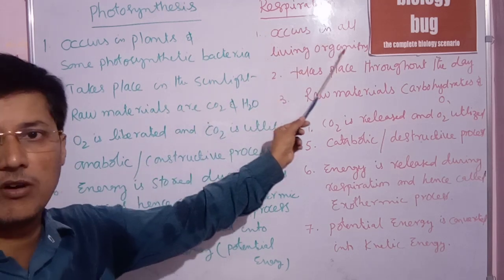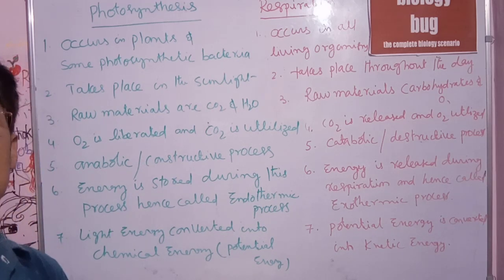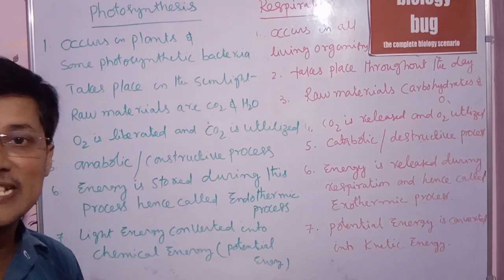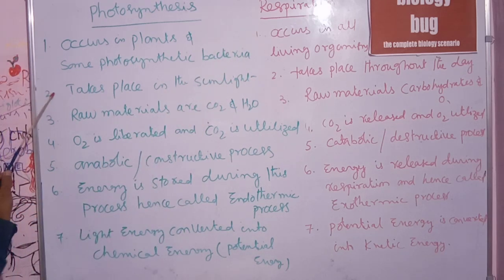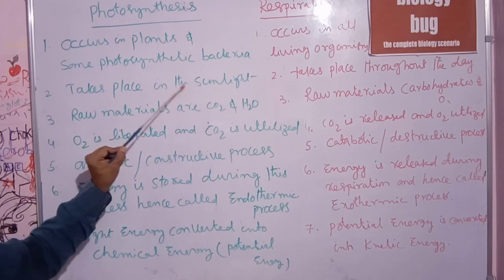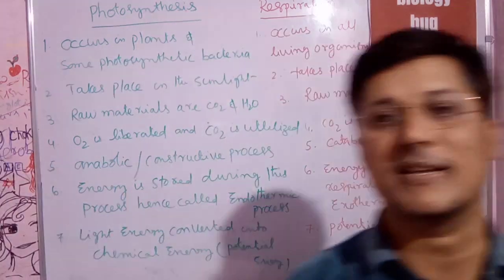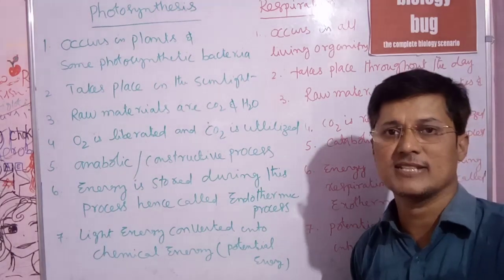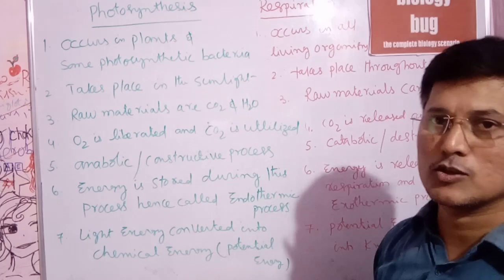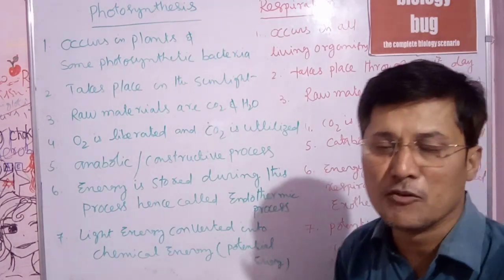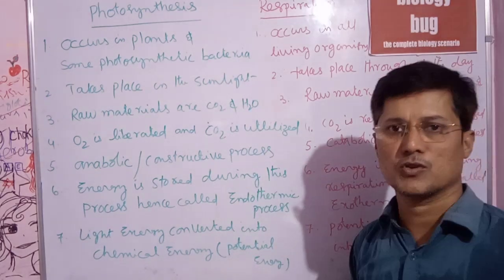Respiration is the energy-releasing system. The second point is that photosynthesis takes place in sunlight. Plants prepare their own food in the presence of sunlight — the ultimate energy source is solar energy. Plants prepare their own food with the help of sunlight through photosynthesis.